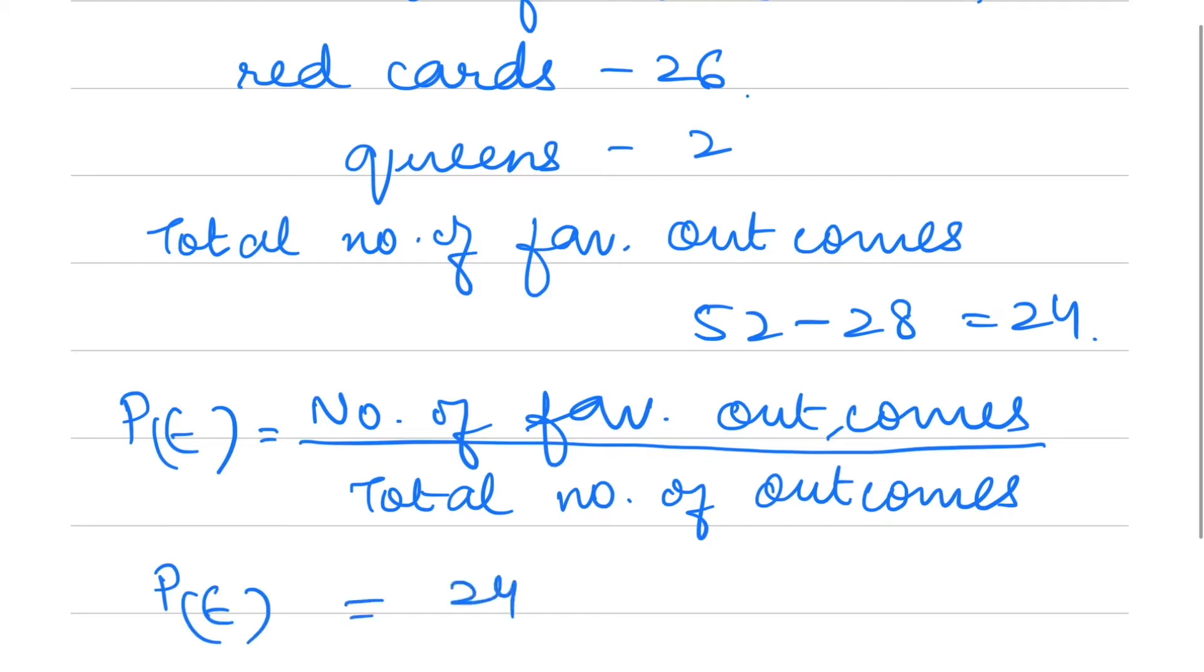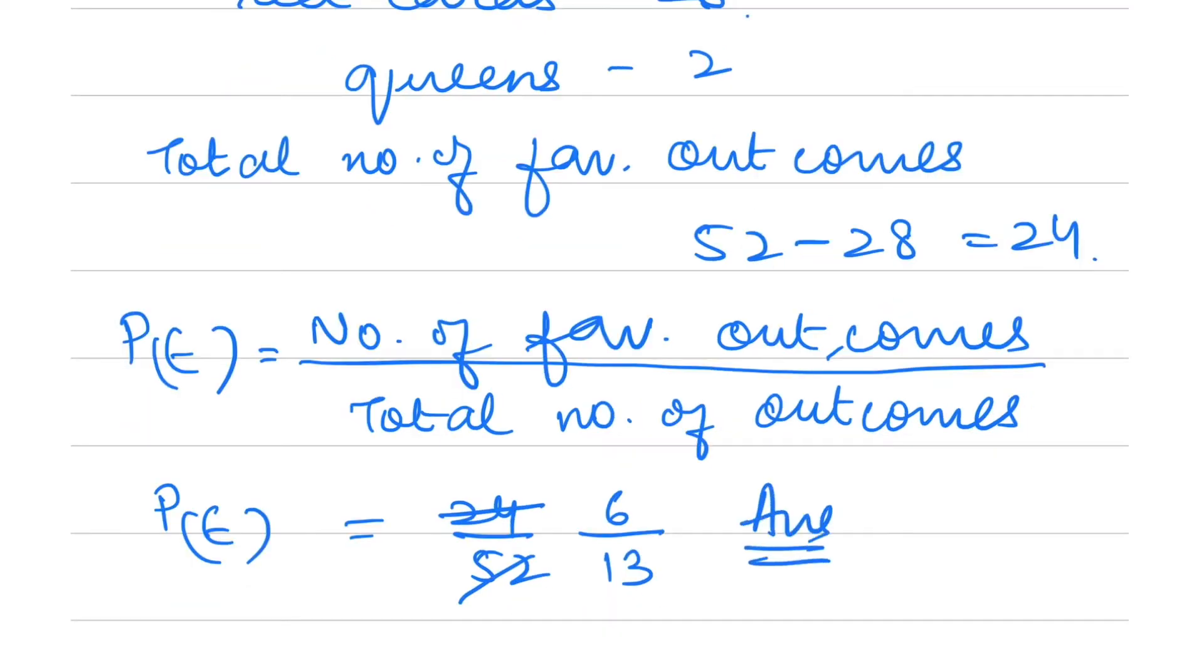So probability is 24 by 52, which simplifies to 6 by 13.